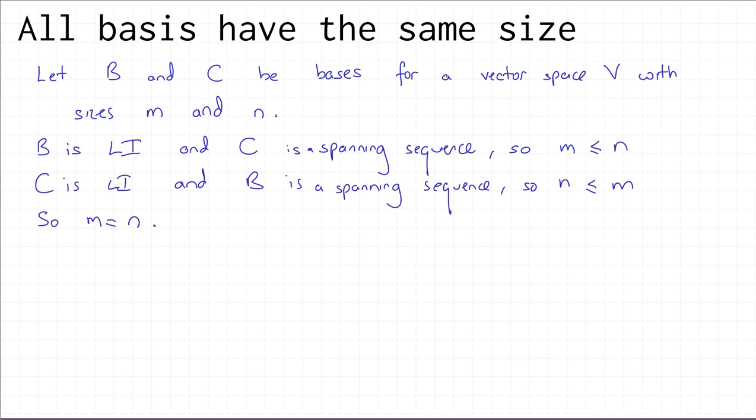There is a kind of problem here: the argument we made only works when you have bases of finite size. Couldn't there be vector spaces which need an infinite basis? The answer is yes — for example, the vector space of all polynomials in one variable x doesn't have a finite basis. So our argument here works only for vector spaces which have finite bases; those are called finite-dimensional vector spaces. For infinite-dimensional vector spaces it's more complicated, but in this course we're only really concerned with finite-dimensional vector spaces.